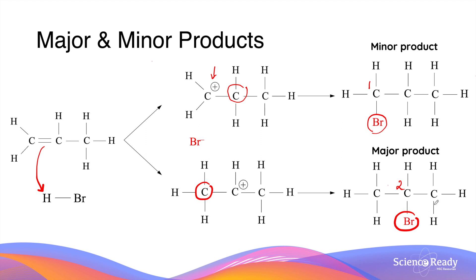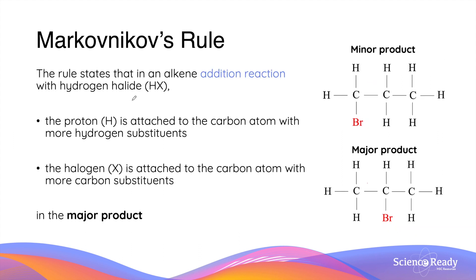As a result, 2-bromopropane is referred to as the major product of the reaction, while the other is called the minor product of the reaction. Markovnikov's rule explains why 2-bromopropane is the major product. The rule states that in an alkene addition reaction with hydrogen halide, the hydrogen atom or proton is attached to the carbon atom with more hydrogen atoms attached to it. So for example, in the major product, the hydrogen atom is attached to the first carbon as it has two hydrogen atoms already bound to it, instead of the second carbon where it only has one.